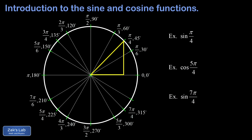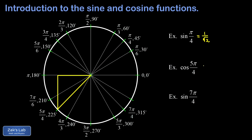For the sine of π/4, we look at the original triangle in the first quadrant. The length of the vertical leg is 1/√2, and the y-coordinate is positive, so sine of π/4 is 1/√2, or equivalently √2/2. For cosine of 5π/4, we move the triangle to the third quadrant — the legs are still both 1/√2, but the x-coordinate is negative. So cosine of 5π/4 is −1/√2.